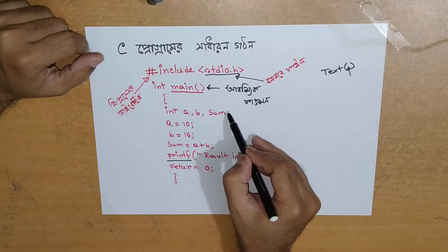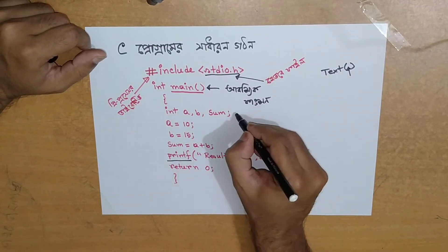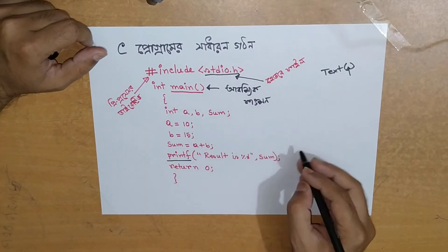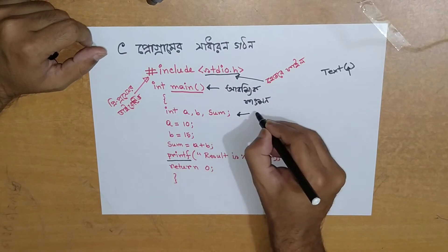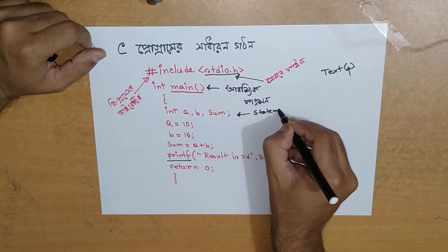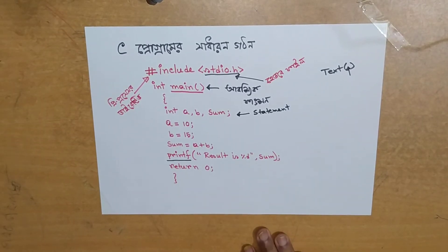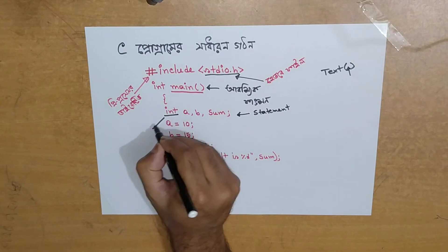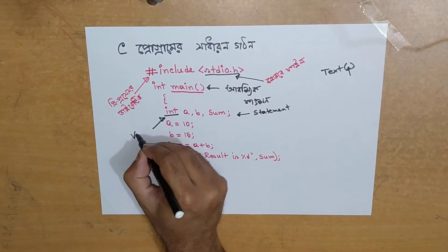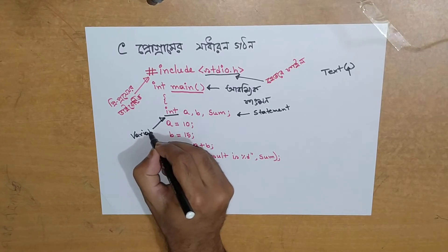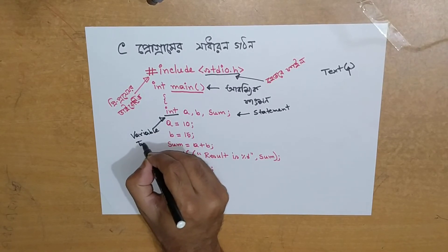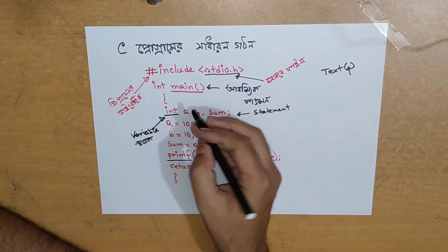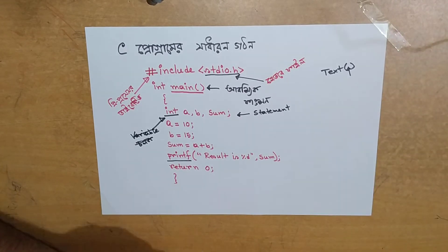Here is one statement. We will check the statement. The integer is the data type, and the integer is used to declare a variable. We have to check the data type.